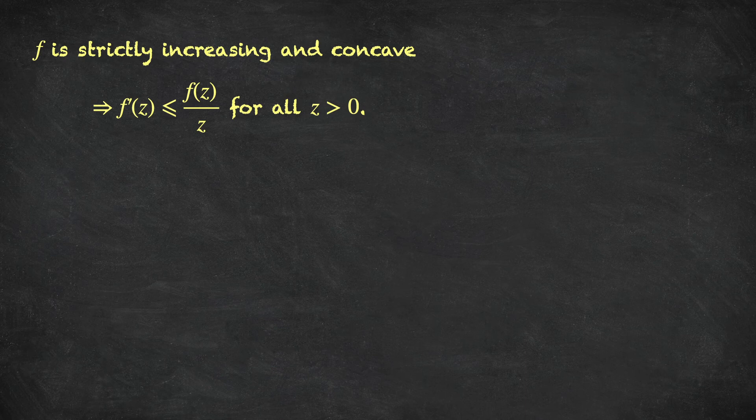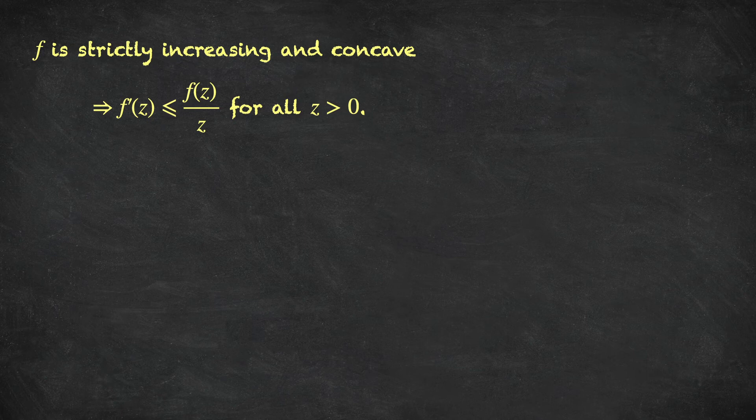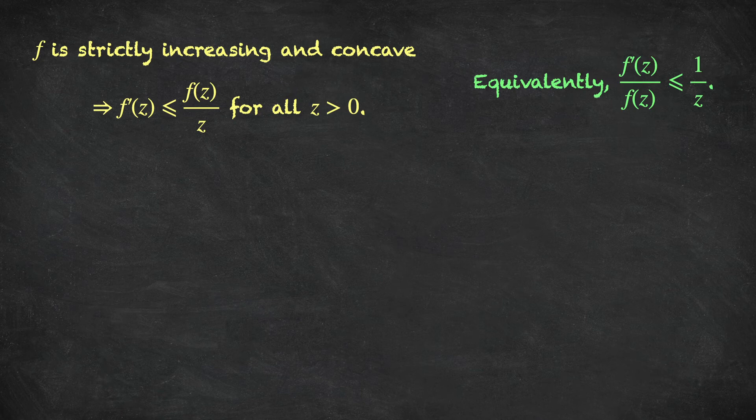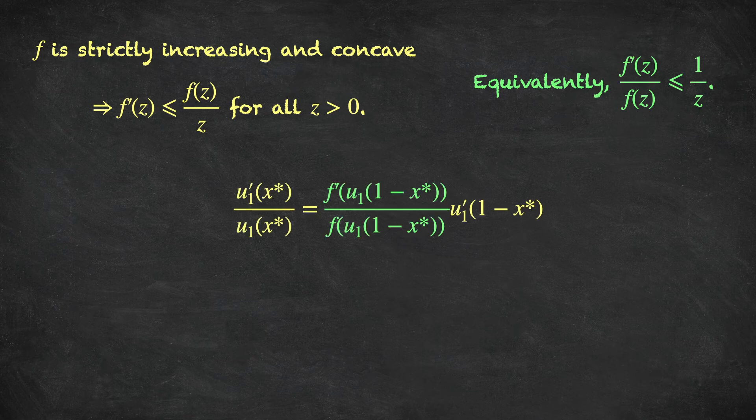So let's put this inequality to use. Because our function F is strictly increasing and is zero at zero, we know that F is strictly positive for all Z greater than zero, and so we can rearrange this inequality to be F prime of Z over F of Z is less than or equal to one over Z for all strictly positive Z.